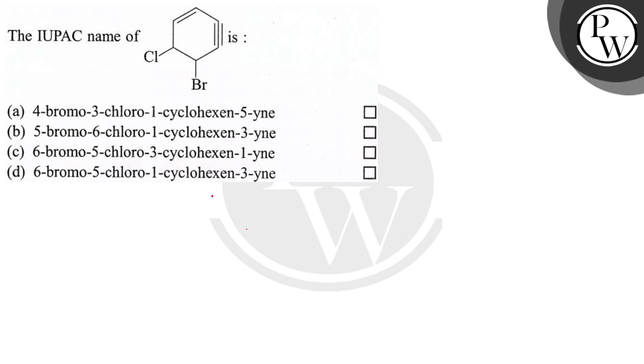Okay, so let's solve the question. This is the compound where there is a double bond and a triple bond. In this kind of compound, the double bond will be given the priority.